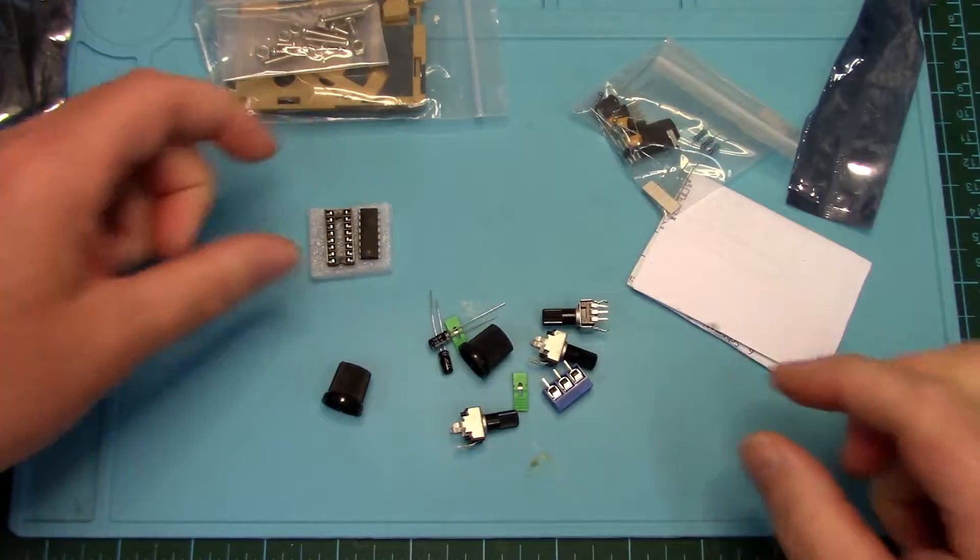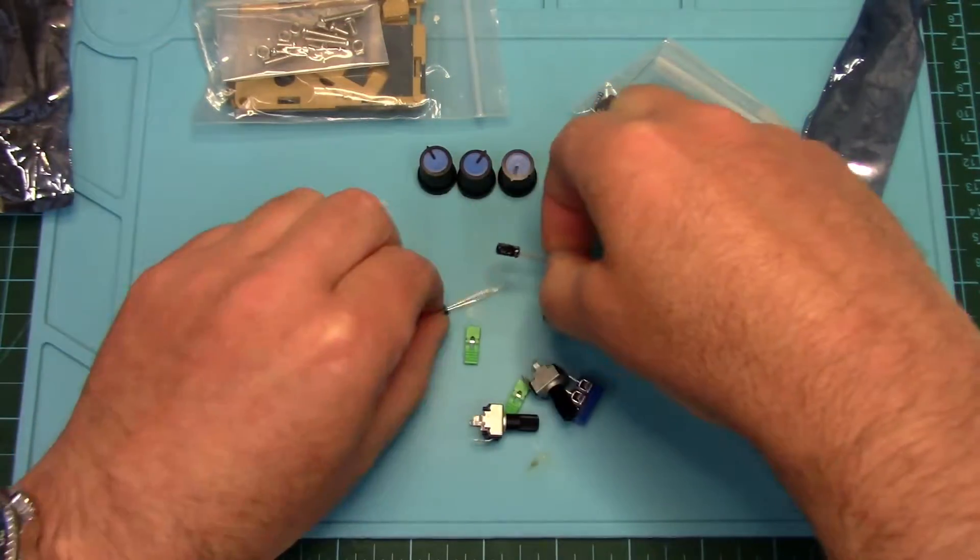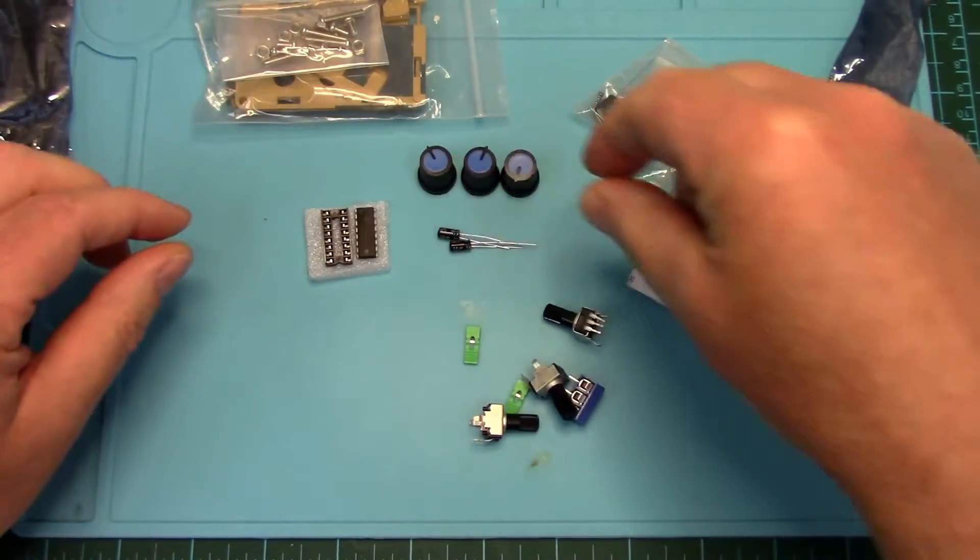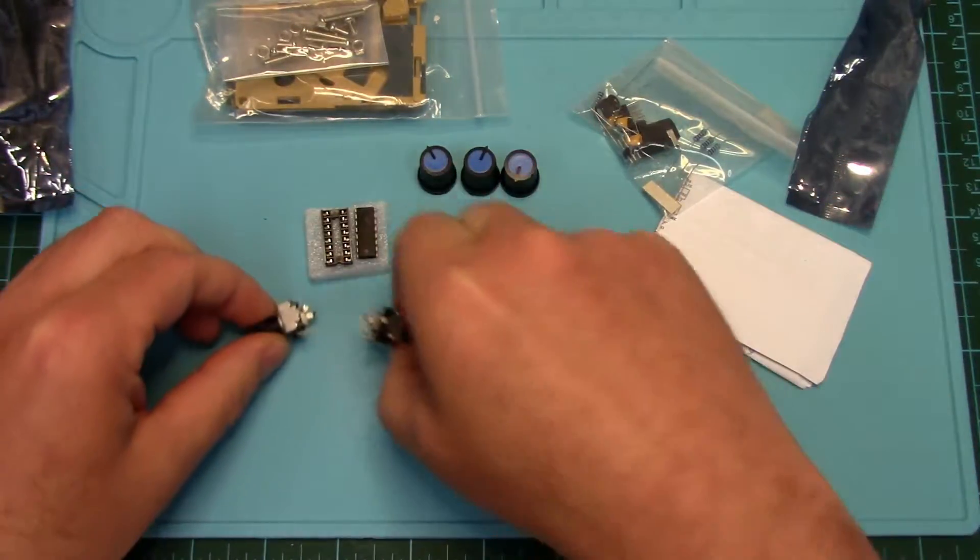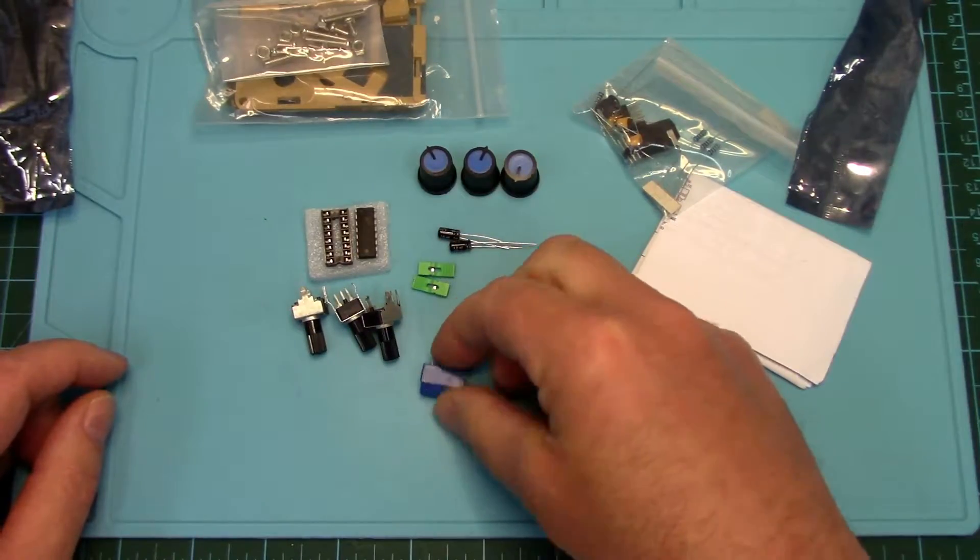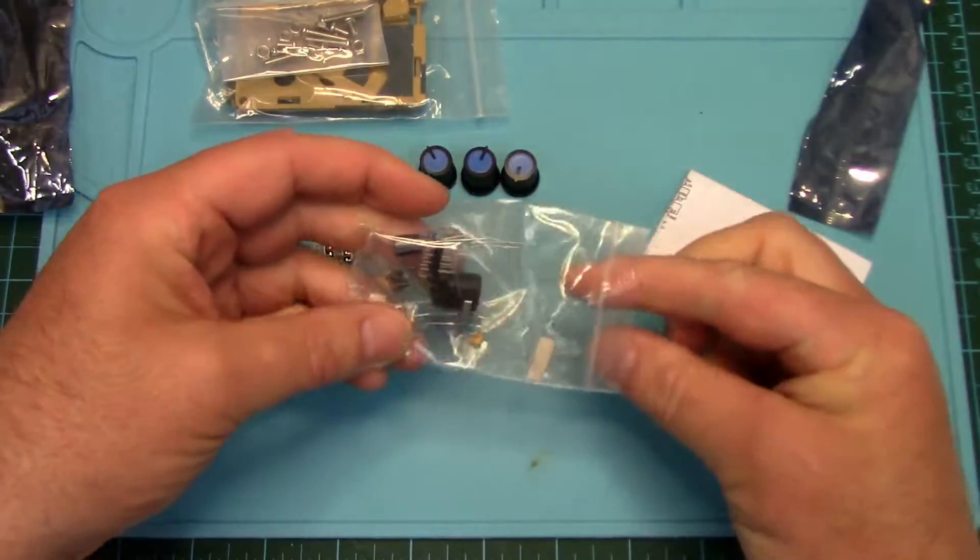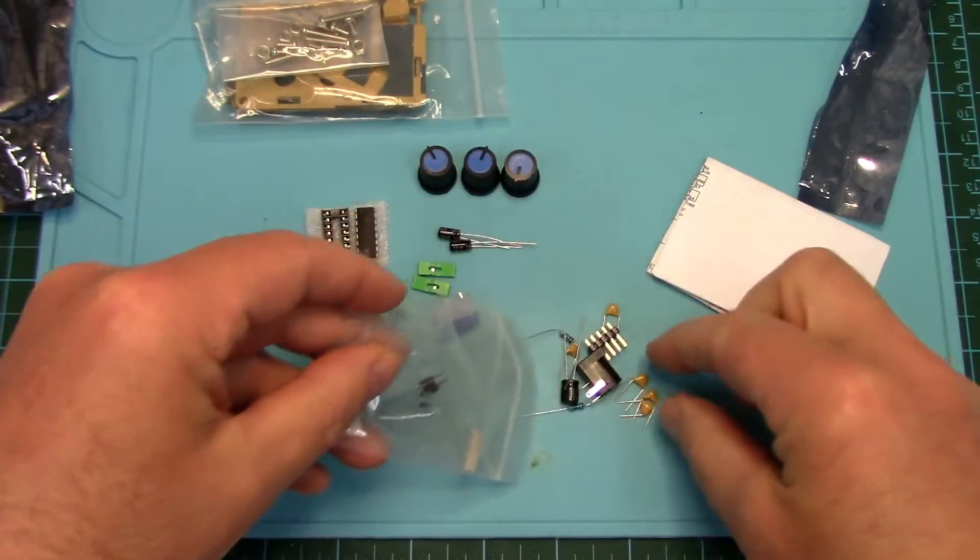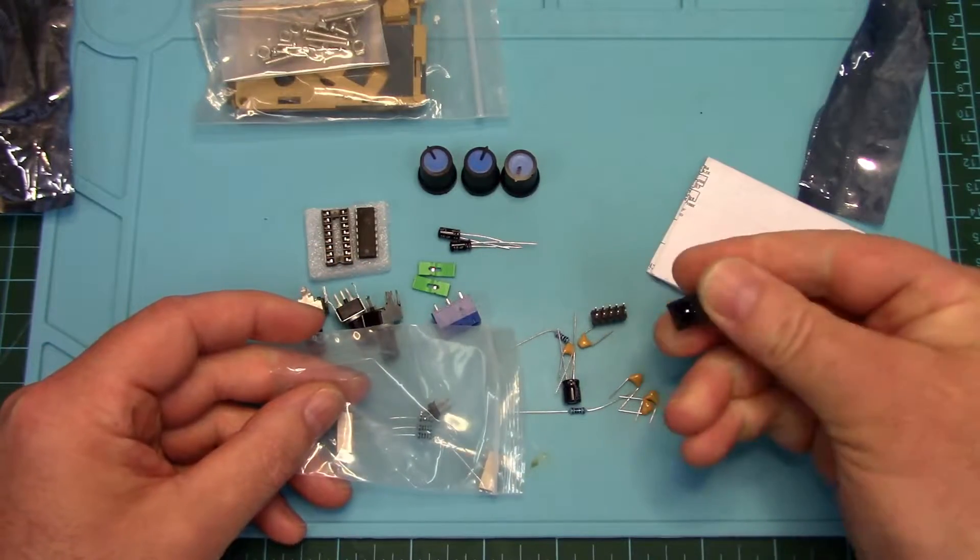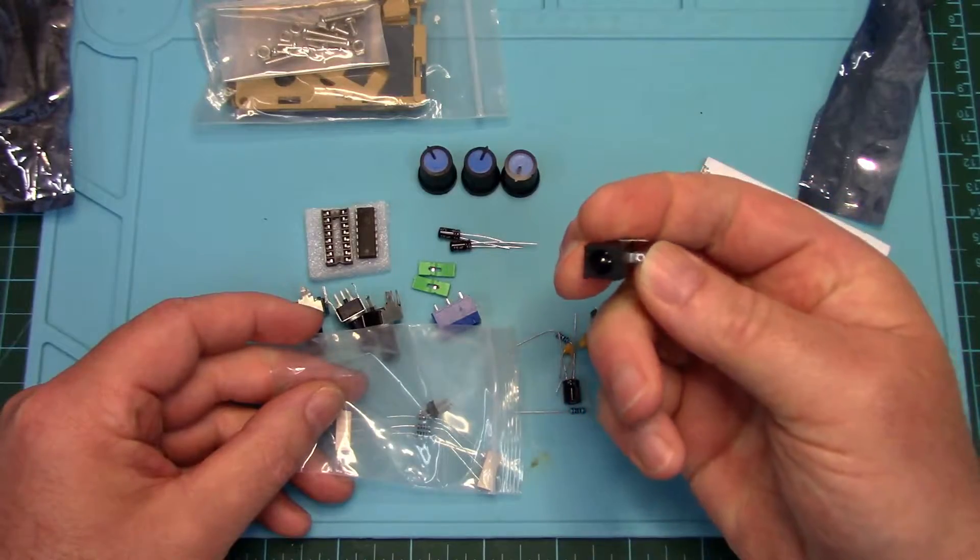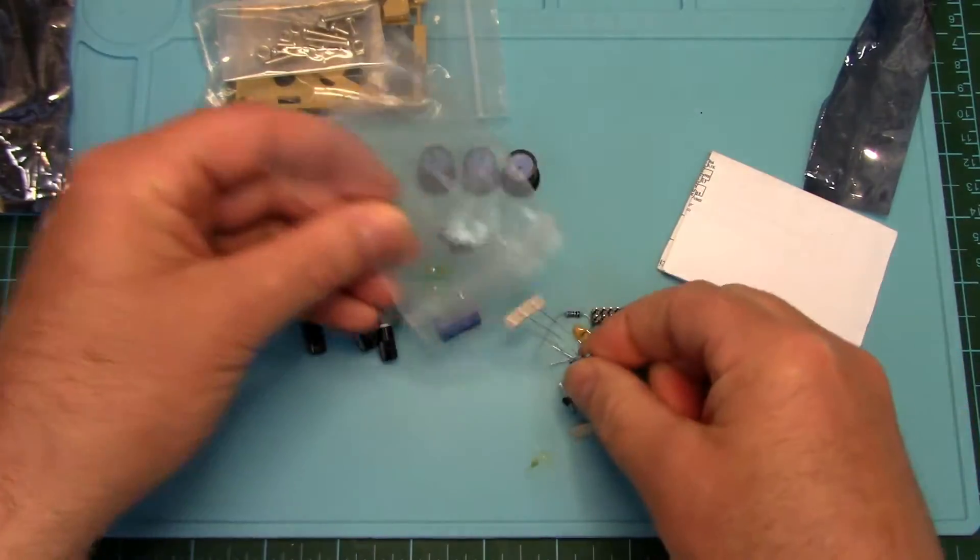There's our little IC. We've got three knobs and some capacitors, some pin jumpers, and some potentiometers. Our little screw terminals. We've got some more goodies in here. Some more capacitors. There's our little jumper bridge. Our barrel connector power input, the capacitors, some resistors, some more jumpers, and some more resistors.